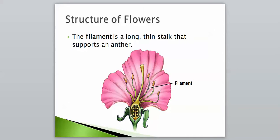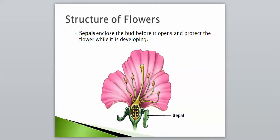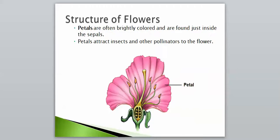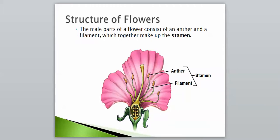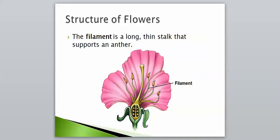Quick review: we have petals, we have sepals which are right below the petals, we have the stamen which makes up the anther and the filament, we have the anther, and we have the filament.